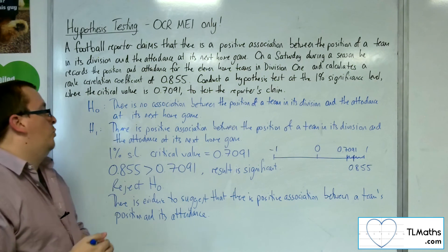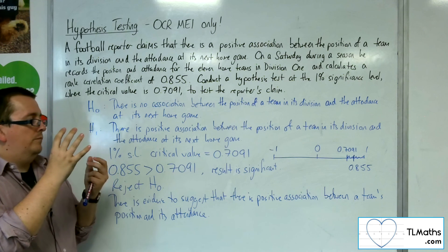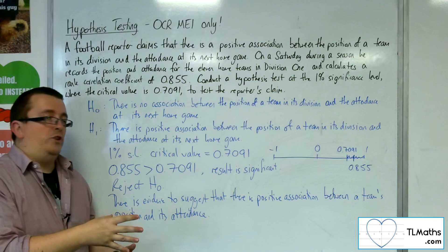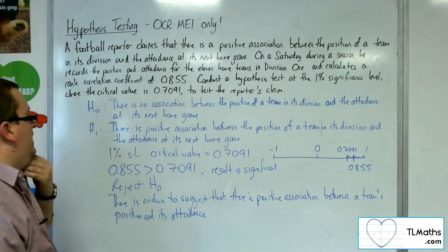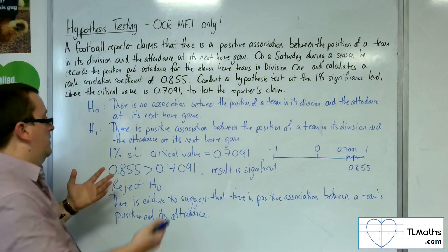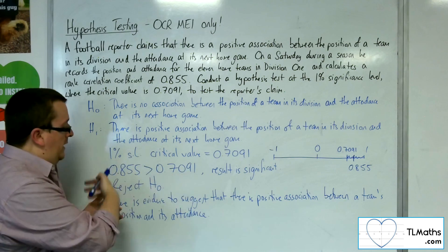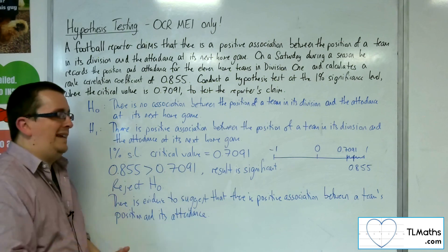So, it's almost quicker than the product moment correlation coefficient one. As long as we can write those out, it's really just picking out the information. We're saying this one is larger than this one, and so we then can complete the test.